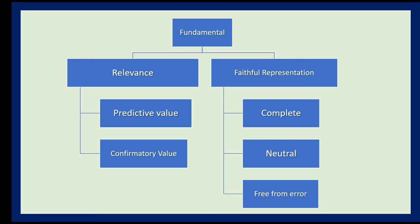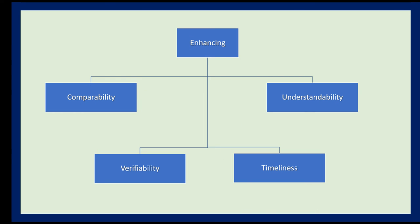When information has both predictive and confirmatory value, only then can you say it is relevant. We also have Faithful Representation. Financial statements should be faithfully represented, and to achieve this, they must be complete, neutral, and free from error. Complete means all transactions are properly recorded and all required disclosures are included. Neutral relates to objectivity — not biased toward any party. Free from error means the financial statements must be accurate.